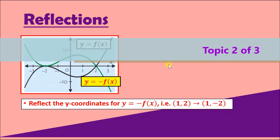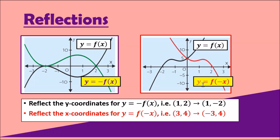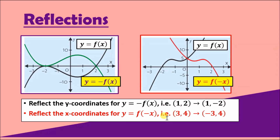Next are reflections. If you have a normal function f(x) and write −f(x), you reflect the y-coordinates, because y = f(x) — so all y-coordinates change sign. For example, if a point was (1, 2), the 2 becomes −2; if it was −3 it becomes +3. Similarly, f(−x) means you deal with the x-coordinates: a point (3, 4) becomes (−3, 4).